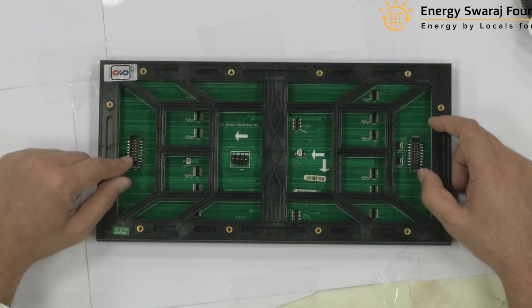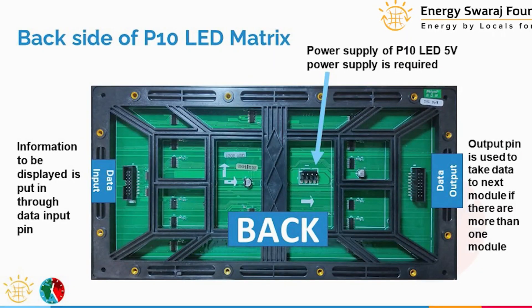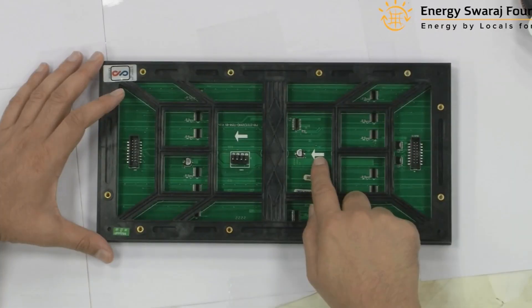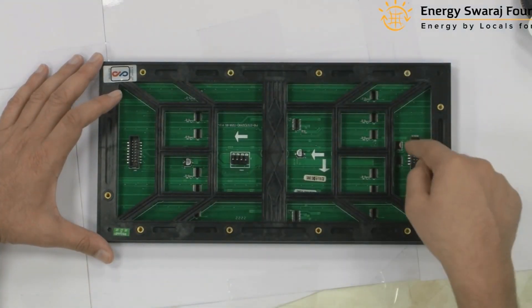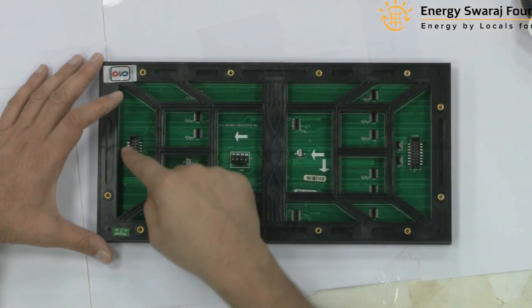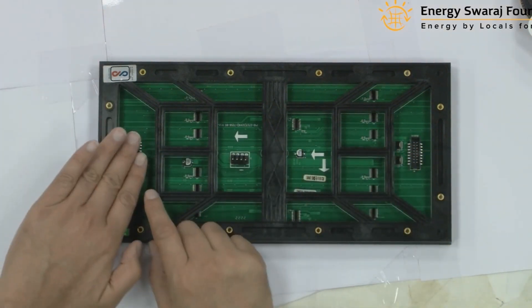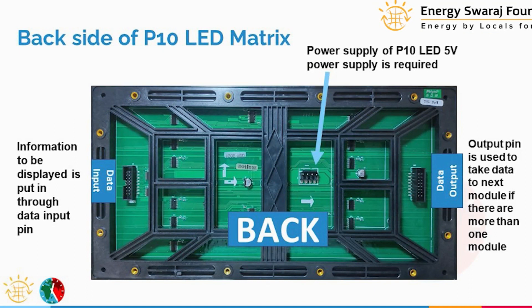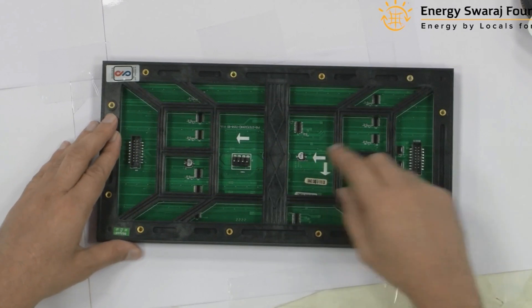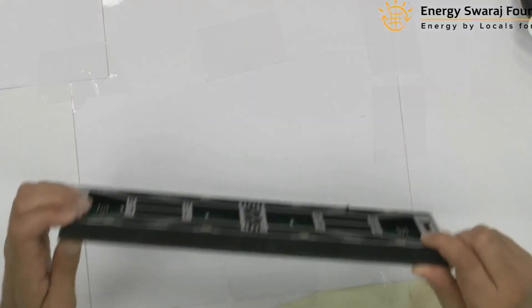Since it's a continuous display, data has to come in from one side and go out the other. The direction of data flow is shown by the arrows on the back. Data is fed in here, comes out on the other side, and then goes to the next P10 display — since we are using three P10 displays chained together.